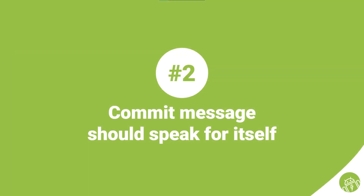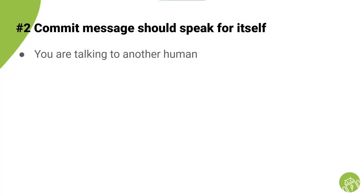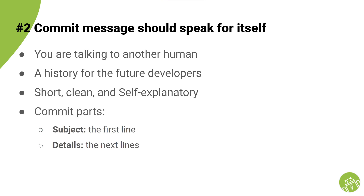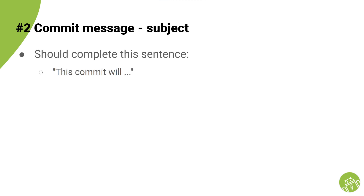Number two: commit messages should speak for themselves. Always keep in mind that with your commit message or pull request description, you are talking to another human and you are not coding anymore. You are writing a history for future developers. Make sure your commit messages are short, clean, and self-explanatory. Your commit messages should also have the potential to become your pull request description without any changes and get your reviewers' approval. Git commit messages have a first line called the subject and the rest which are details. The subject should complete the sentence short and right to the point: 'This commit will...'